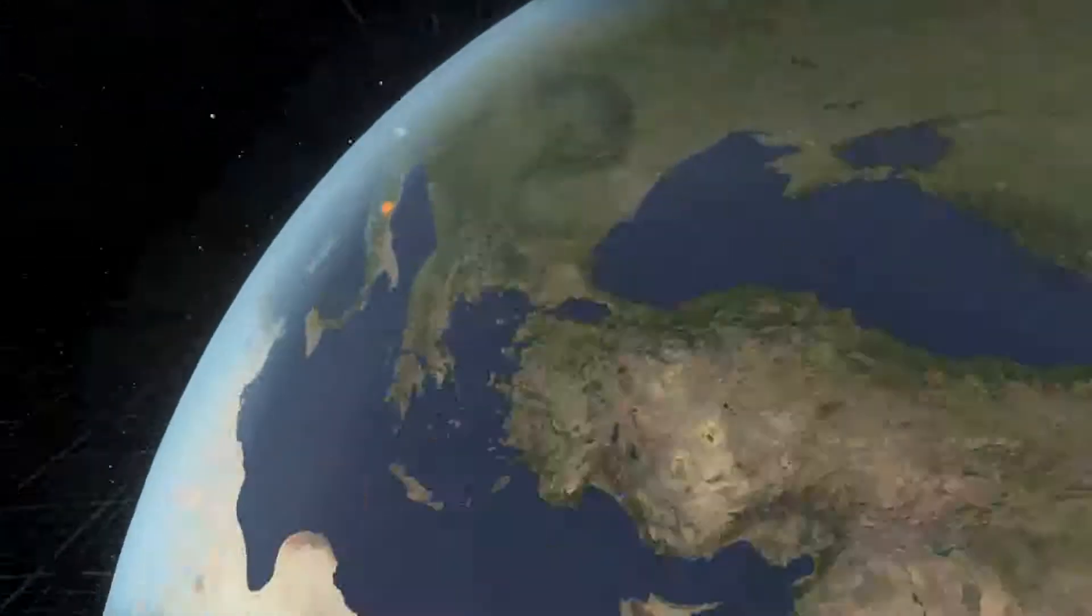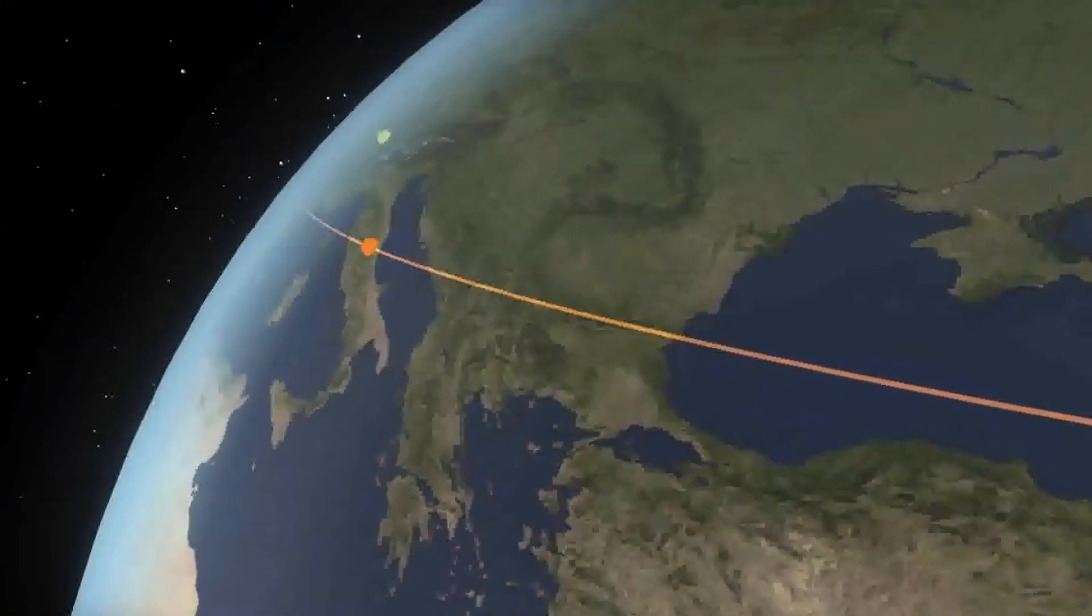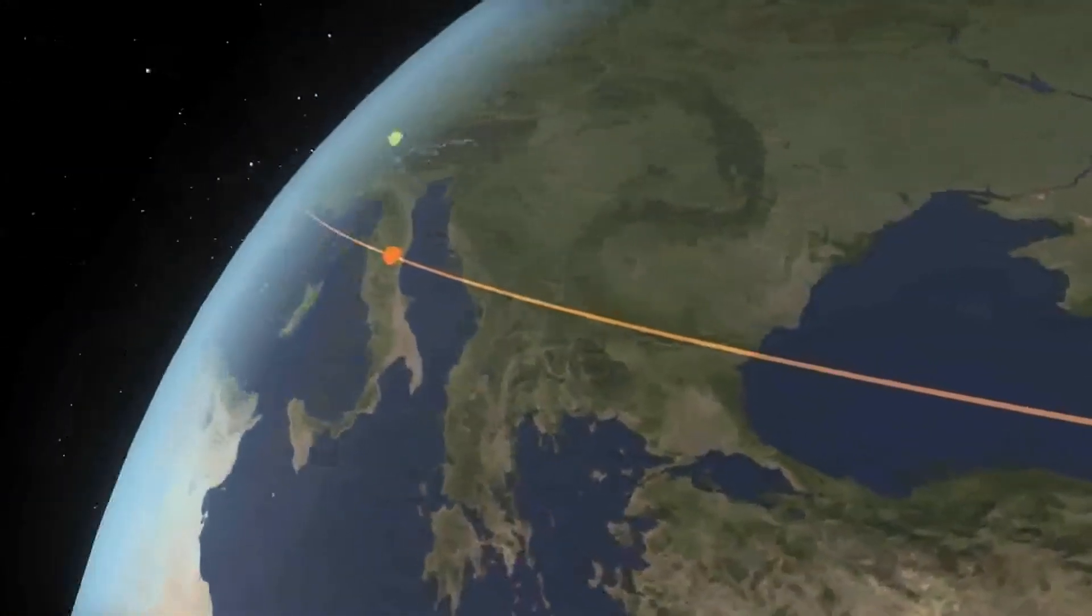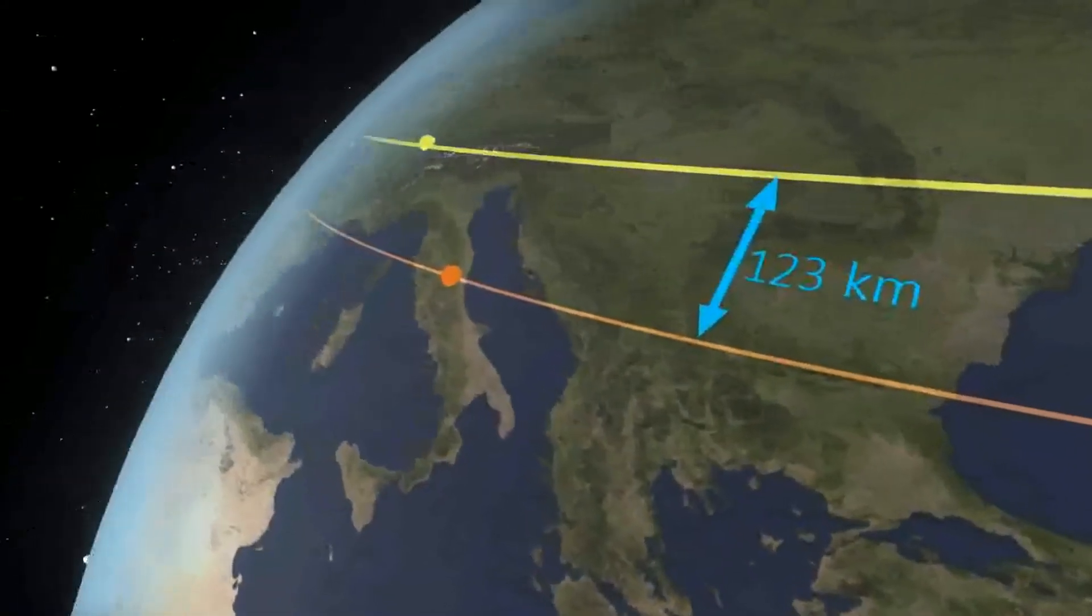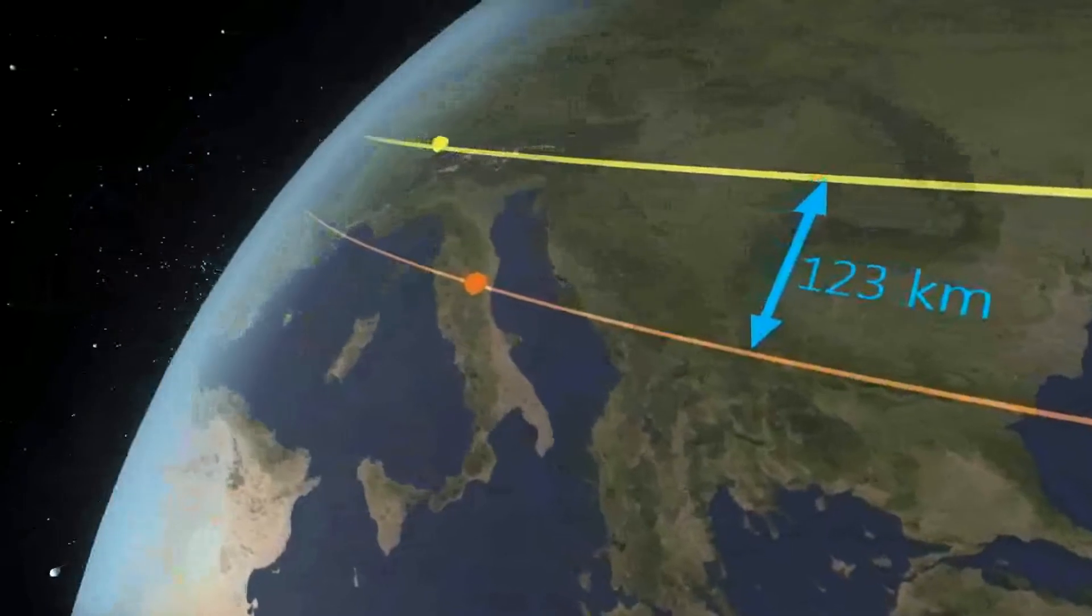In the case of the OPERA observations, the clock at the detector under the Grand Sassel Mountains in Italy runs fractionally slower than the clock at the neutrino source at CERN, 123 kilometers to the north on the border of France and Switzerland.